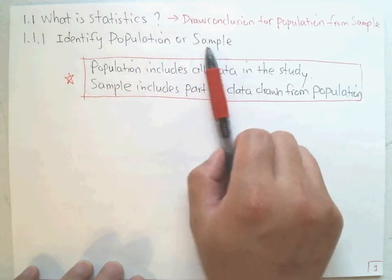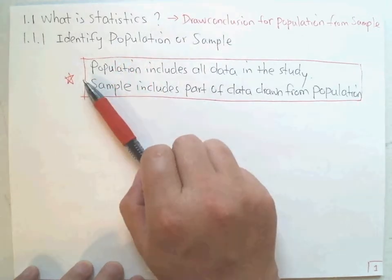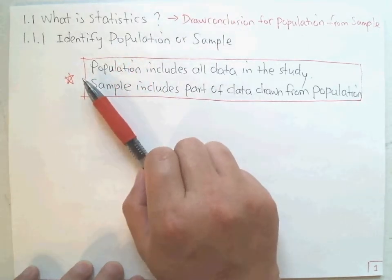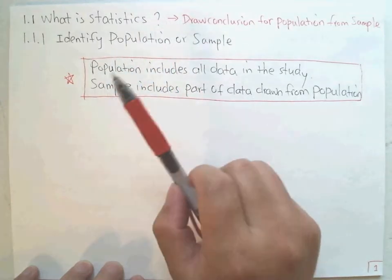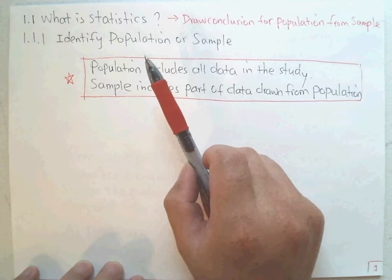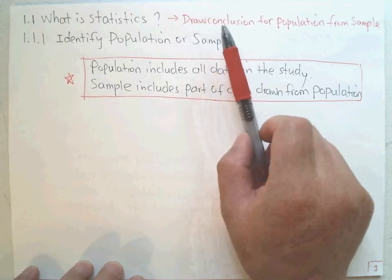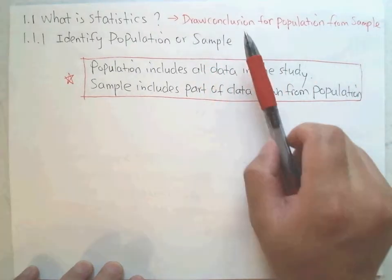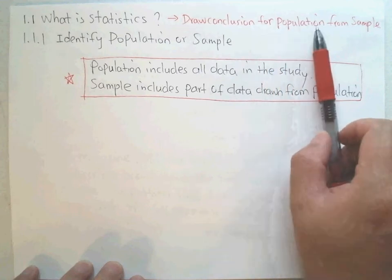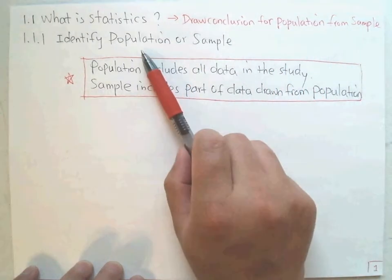So what is a statistic? Statistics is usually called data analysis. First we need to collect the data and then analyze the data. The most important thing is to draw conclusions from the data. The conclusion is drawn for the population using a sample, or from the sample. So population and sample is the beginning of statistics.